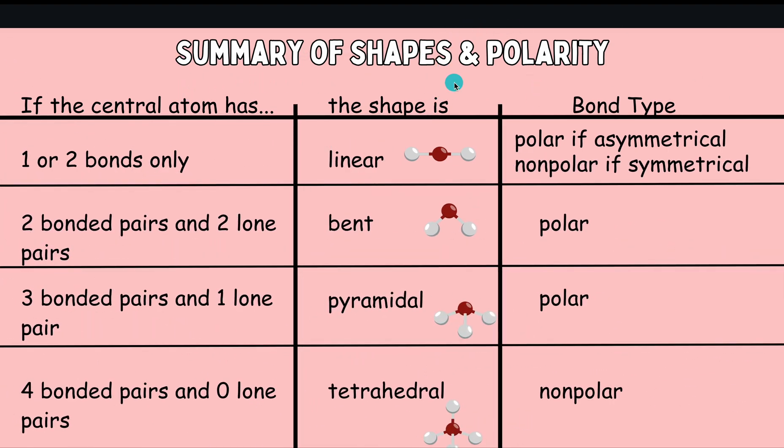I'm not going to go through every single part of this, but this is kind of a summary or an overview of all the shapes and different polarities that they might be.